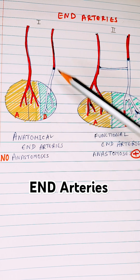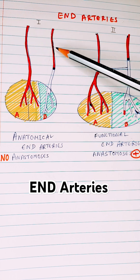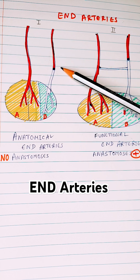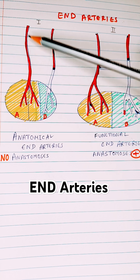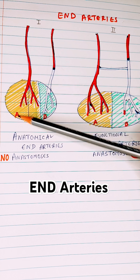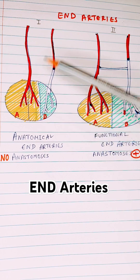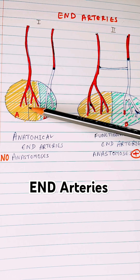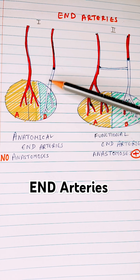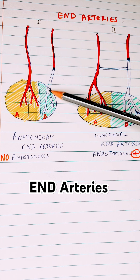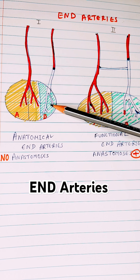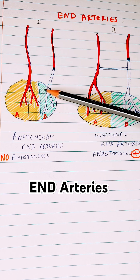Looking at anatomical end arteries in this diagram, there are two separate blood vessels. This blood vessel supplies tissue A and this blood vessel supplies tissue B, and there is no overlap in the area supplied by each blood vessel. So if one blood vessel is blocked, there is no alternative blood supply for that tissue.